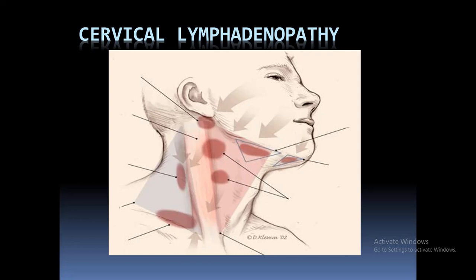Bismillahirrahmanirrahim. I am Dr. Daud and the topic of today's lecture is cervical lymphadenopathy. You can see in this picture that the neck can be broadly divided into two triangles: the anterior triangle and the posterior triangle. This muscle is the sternocleidomastoid. The anterior triangle is from the midline up to the anterior border of sternocleidomastoid, and the posterior triangle is from the posterior border of sternocleidomastoid up to the trapezius muscle. The inferior boundary of the posterior triangle is formed by the clavicle.